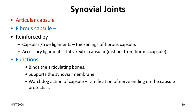The fibrous capsule is reinforced by capsular or true ligaments, which are thickenings of the fibrous capsule, and by accessory ligaments. Accessory ligaments can be within the capsule — called intracapsular ligaments — or outside the capsule — called extracapsular ligaments. These accessory ligaments are distinct from the fibrous capsule.